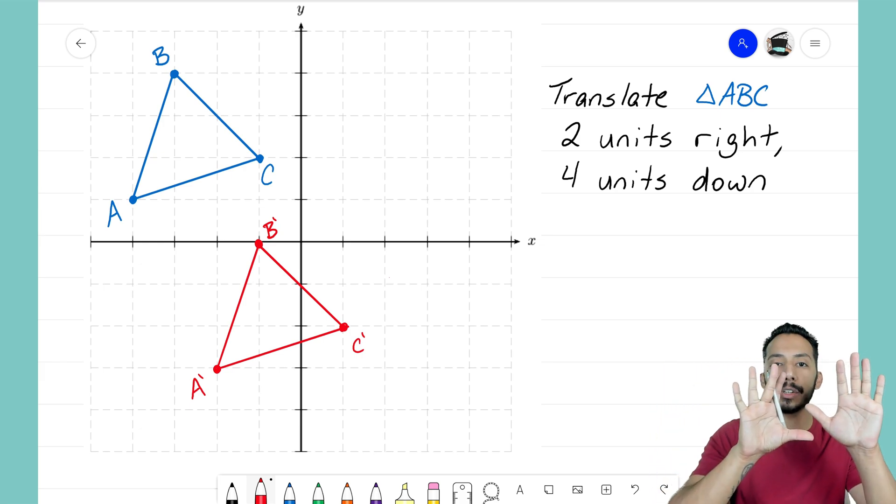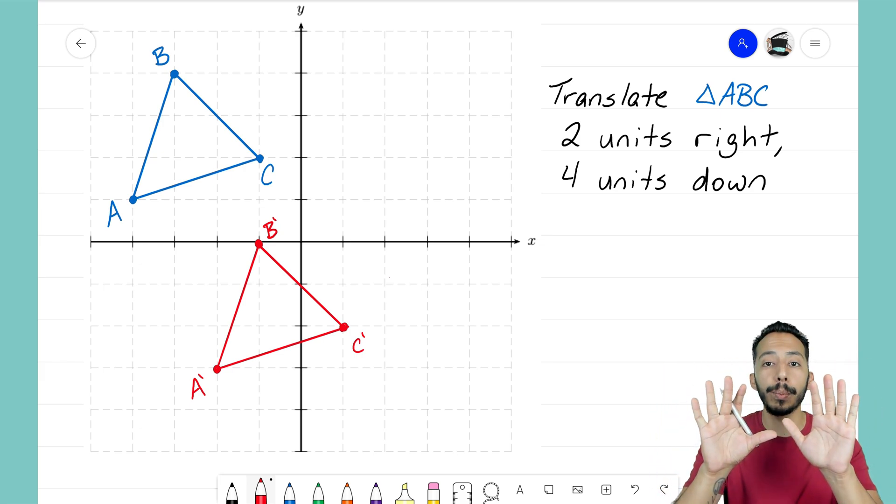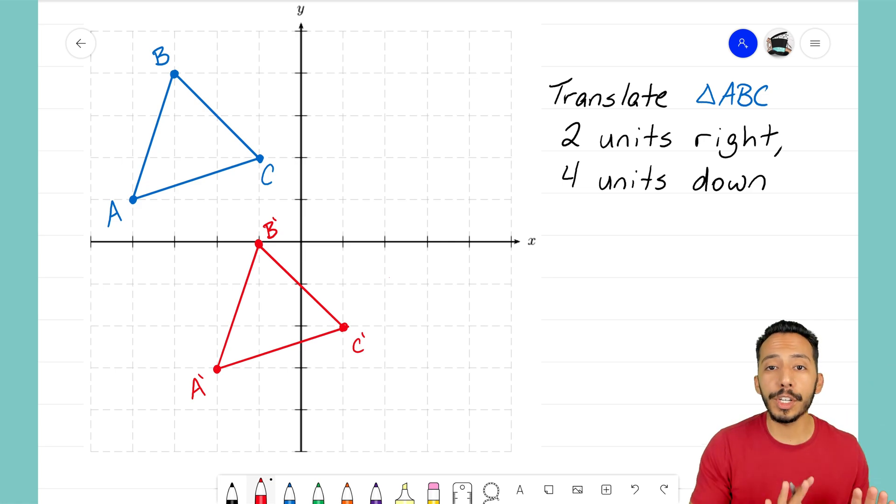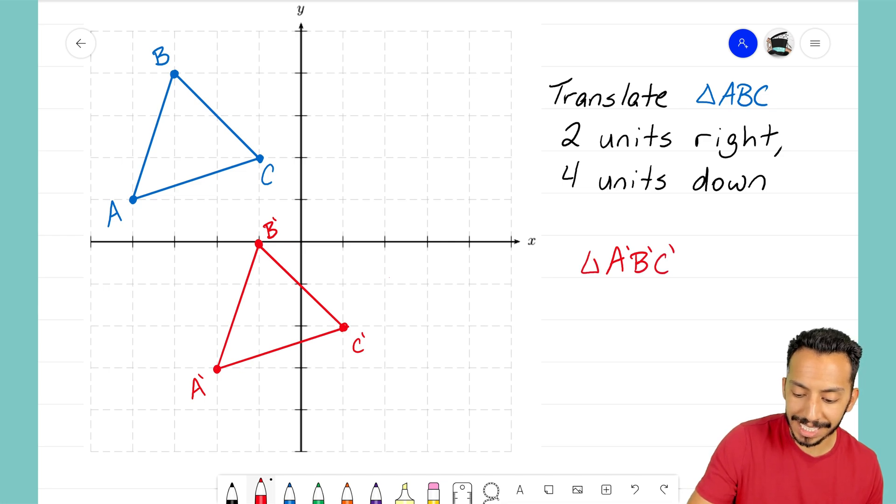We took that triangle and we slid it two units to the right, four units down, and now we have this new triangle, triangle A prime B prime C prime. And that's how you do it.